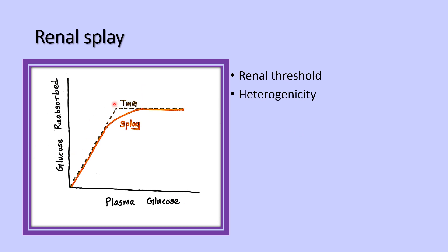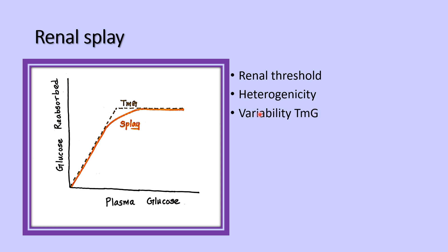The transport maximum is 375 mg per minute, but deviation occurs when the reabsorption curve deviates at around 250 mg per minute. Similarly, the ideal renal threshold is 300 mg per deciliter, but glucose appears in the urine at around 180 to 200 mg per deciliter. The renal splay is mainly due to the heterogeneity of the glomerular size, tubular length, number of carrier proteins for glucose, and variability of the transport maximum in different tubules in the nephron.